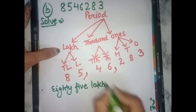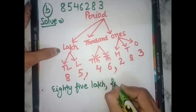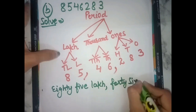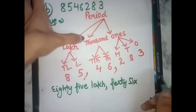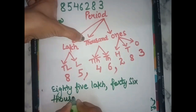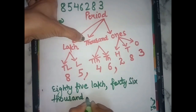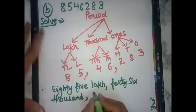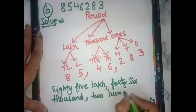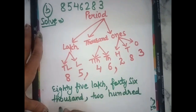6 thousand, 46,000 — what do we put next? Comma. What comes next? 200. And then 83.